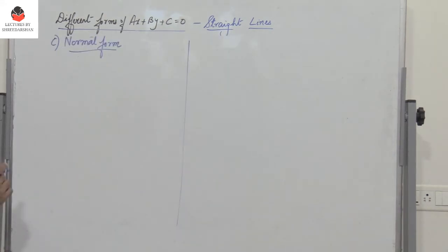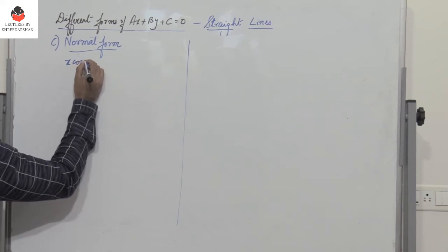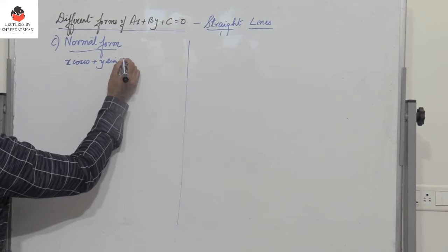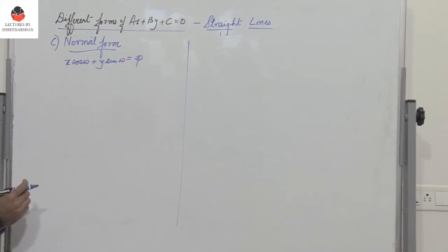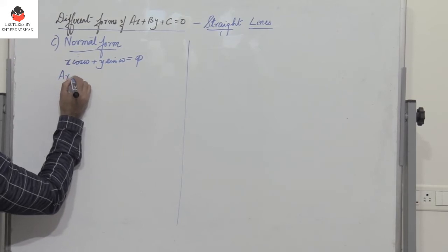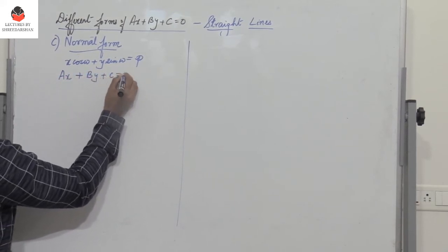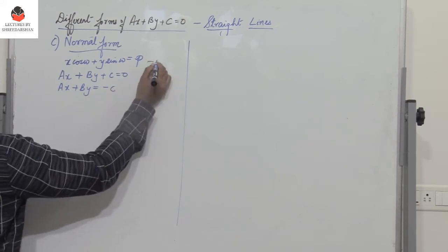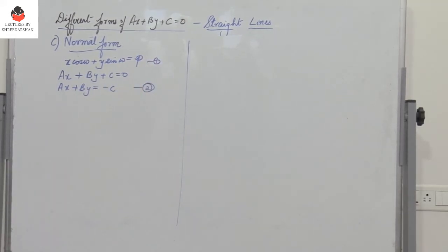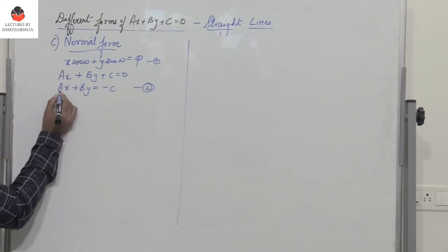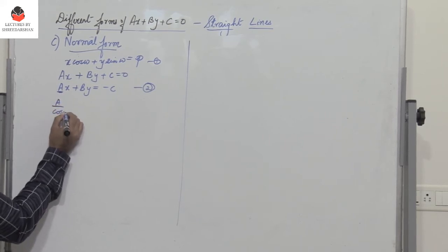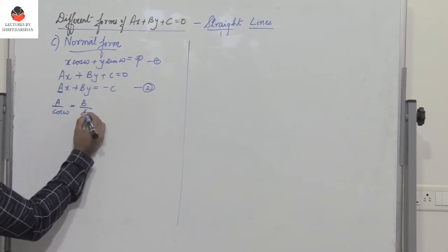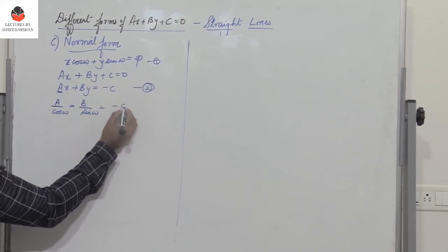Now let us discuss the normal form. We know that X cos omega plus Y sine omega equals P is the normal form. We have AX plus BY plus C equal to 0, or AX plus BY equals minus C. Comparing the two equations, we consider the coefficients of X, Y and the constant term. Their ratios must be equal, so A by cos omega equals B by sine omega equals minus C by P.